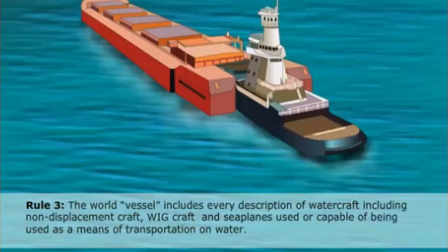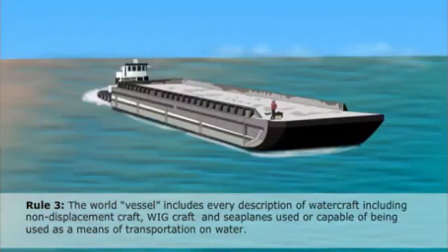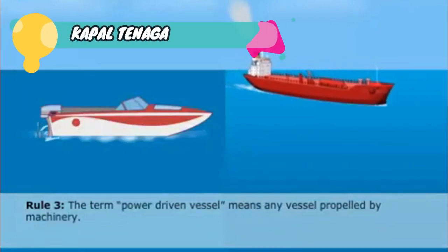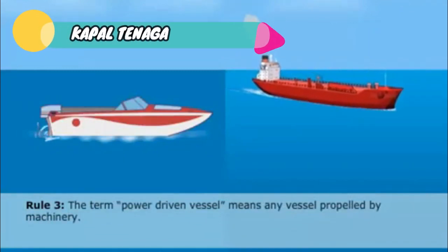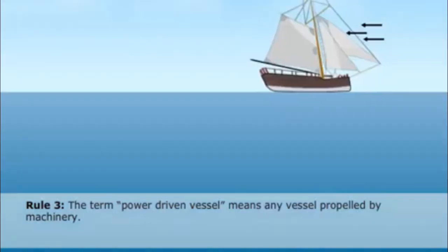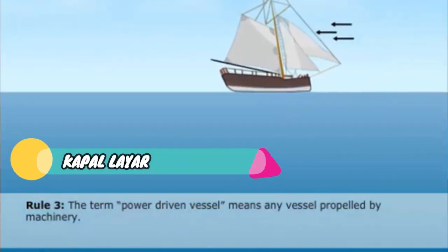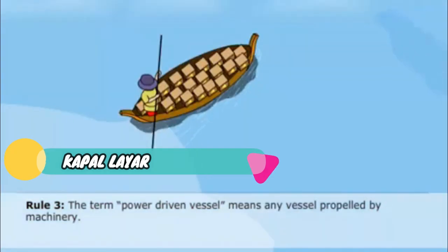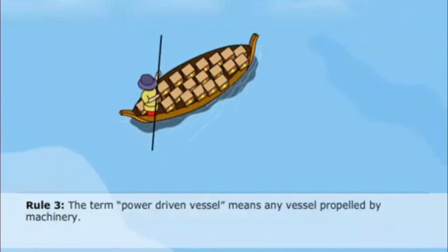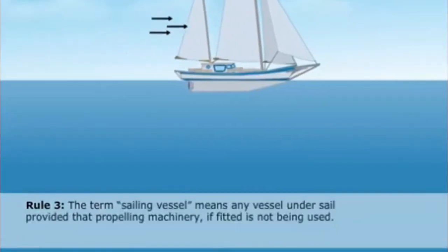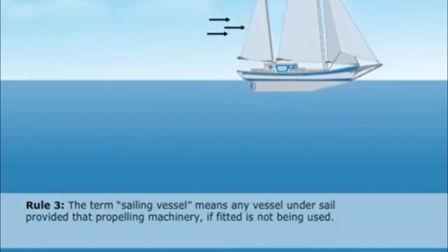Since no propulsion system has been mentioned in this part of the rule, all barges are also included. 'Power driven vessel' means power obtained from machinery such as diesel engines to move the vessel. Sailing vessels are not included as long as they are purely under sail. Vessels under oars are also not included. As long as the sailing vessel is moving by wind and sail, they are called sailing vessels.